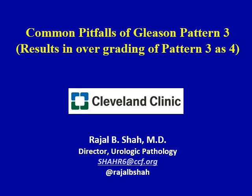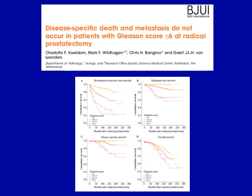In my experience in contemporary prostate biopsy practice, I think we are seeing more problems with the overgrading of prostate cancer compared to undergrading — specifically overgrading of pattern 3 as 4. The reason this is important is that we now know that patients with pure Gleason pattern 3 at radical prostatectomy have an indolent disease; disease-specific death and metastasis do not occur. So the distinction of pattern 3 from pattern 4 in the era of active surveillance management for prostate cancer has become especially critical.